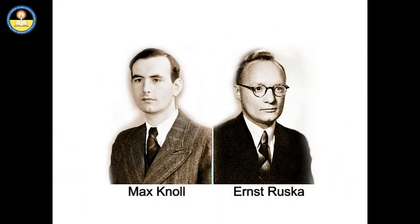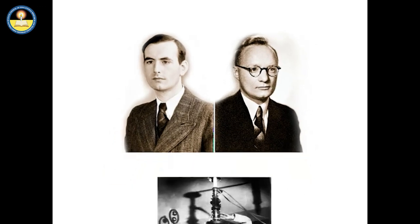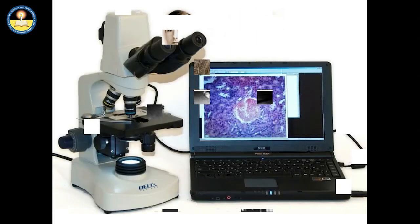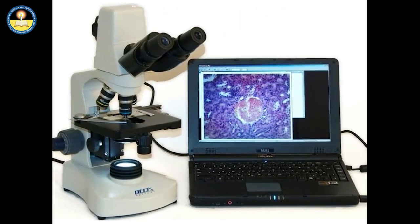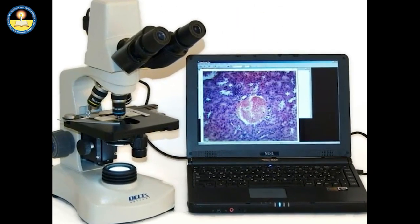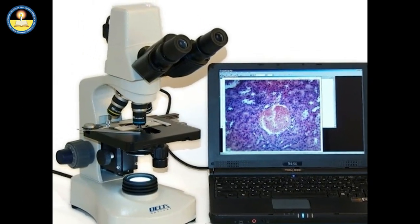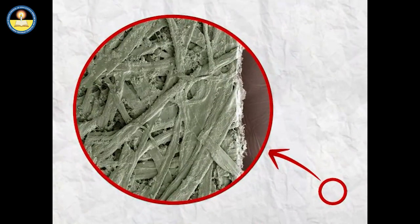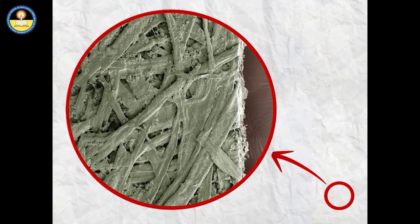German engineer Max Noll and physicist Ernst Ruska were recognized for the development of the first electron microscope in 1932. Microscopes have come a long way since then. These days, compound microscopes with magnifying powers of 1000 to 2000 times are available.